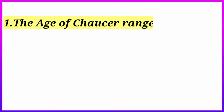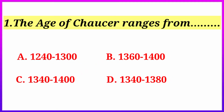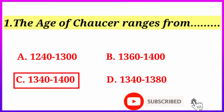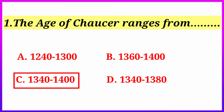Question number one: the age of Chaucer ranges from — option 1: 1240 to 1300; option 2: 1360 to 1400; option 3: 1340 to 1400; option 4: 1340 to 1380. The correct answer is 1340 to 1400. This is the lifespan of Geoffrey Chaucer, who was born in 1340 and died in 1400.